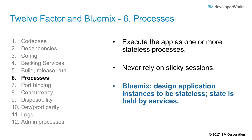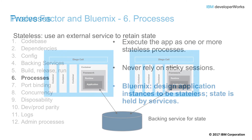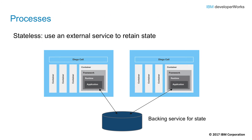Factor number six: processes. Think about this as designing stateless processes — executing the app as one or more stateless processes. This is probably one of the most important things to keep in mind when building a truly scalable, distributed, and cloud-ready application. Because there's no state within a particular process, if we lose a process, it doesn't matter, because traffic is automatically and seamlessly routed to other processes in the environment. For example, with two application instances each running in a different Diego cell tracking user sessions, all session data must be placed into a separate backing service. If one instance crashes, all remaining user traffic can go to the other instance without disruption.